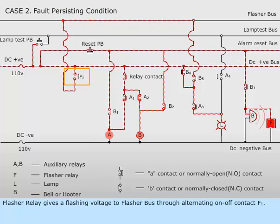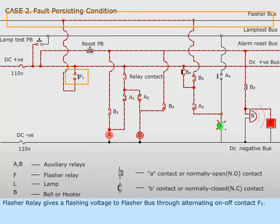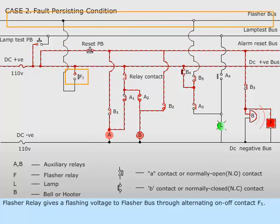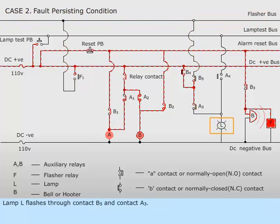Flasher relay gives a flashing voltage to flasher bus through alternating on-off contact F sub 1. Lamp L flashes through contact B sub 5 and contact A sub 3.